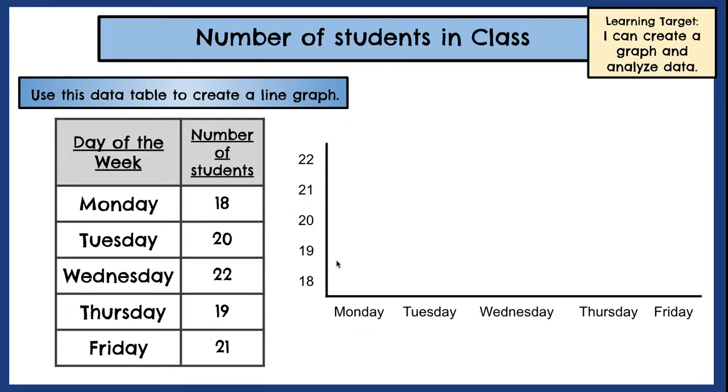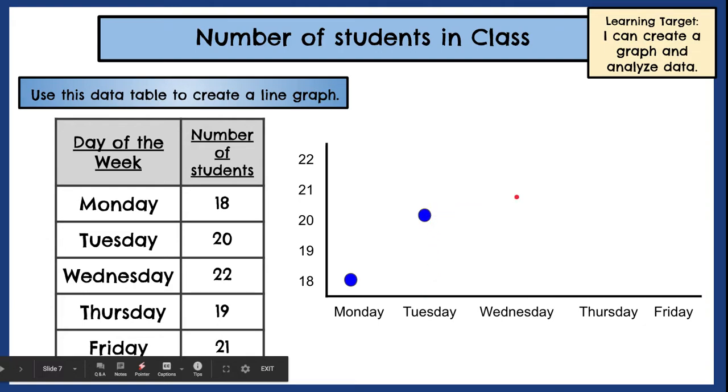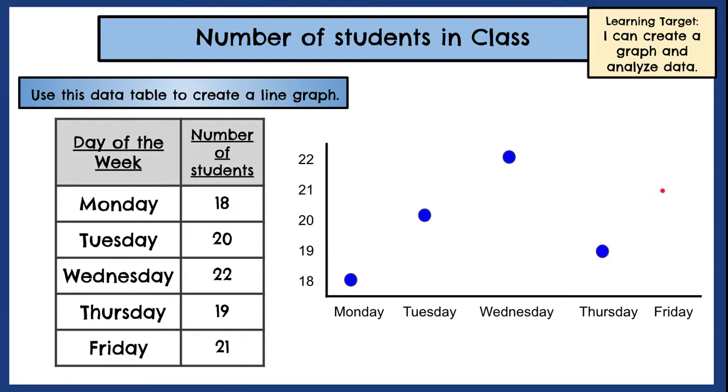So Monday has 18. So we'll first find the 18 and go across to Monday and place a dot there. Then Tuesday with 20 up to 20 down to Tuesday. Wednesday 22 up here. Thursday 19 and then Friday with 21.